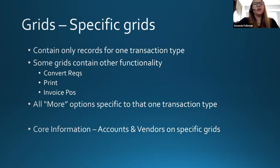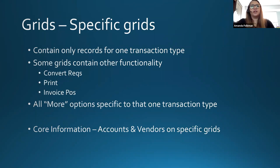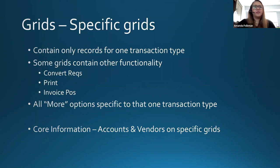On the transaction-specific grids, that contains only the records for one transaction type, and we have some of the other functionality options — you can convert or print. The 'more' option: when we're on that PO grid, anything you can add with the 'more' option is specific to that one transaction type — items related to the purchase order. Also, accounts and vendors are not on the activity ledger, at least not the information you'd find on those grids — so for those, you're always going to go to a specific grid.